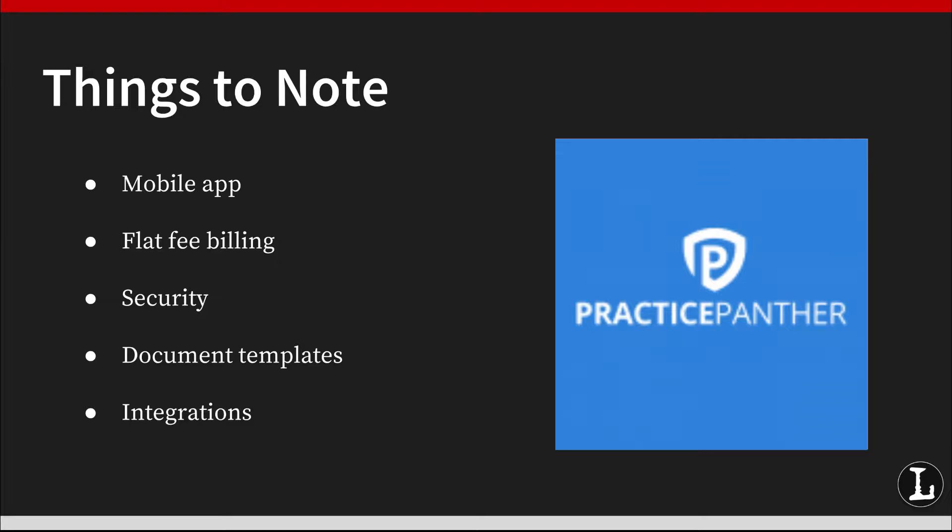Its LawPay integration allows you to set up detailed payment plans for contacts and matters. Simply specify whether you would like to charge your client up to a specific amount or just monthly payments with an end date. Its Gmail and Outlook integrations automatically locate an existing contact or matter in Practice Panther, so you can associate the email with the right file. If the contact or matter doesn't exist, you can create it right from your Gmail or Outlook. You can also create tasks and time entries that are then logged into Practice Panther.